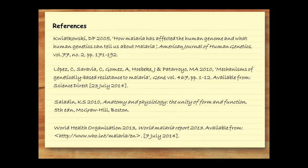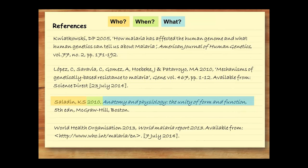Do you have any tricks for remembering what to include in the reference entries? I think of them all as containing who, when, what, and where information. If we look at the reference for a book, for example, we start off with who wrote the book, then when it was published, next what it's called including any subtitles, and finally where others can find the book — which edition number, publisher, and city of publication.